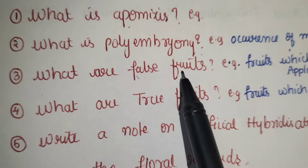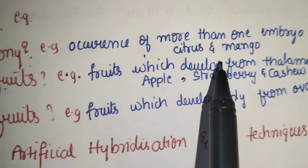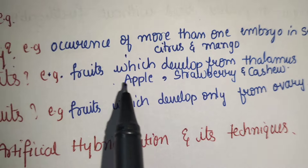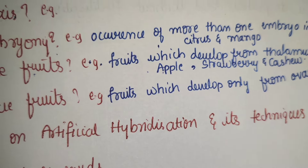What are false fruits? Fruits which develop from the thalamus are called false fruits. Examples are apple, strawberry and cashew.